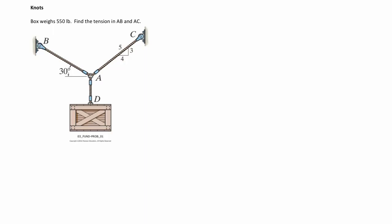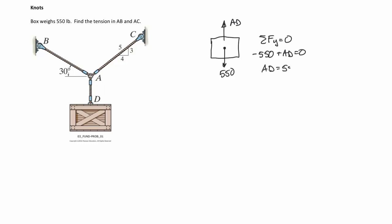Let's solve this problem. We're looking for the tensions in strings AB and AC. We already expect the tension in rope AD equals the weight of the box — let's prove that. Drawing a free body diagram of the box: weight of 550 pounds going down, tension AD going up. Summing forces in Y equals zero: negative 550 plus AD equals zero, so AD equals 550 pounds. Most of the time we won't solve such obvious cases, but this illustrates the process.